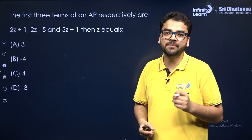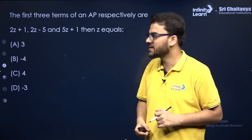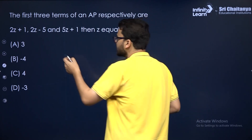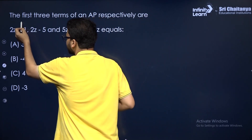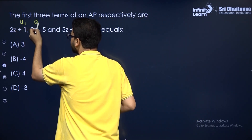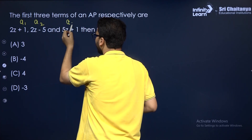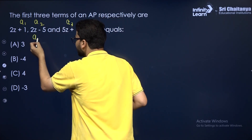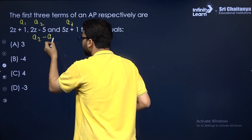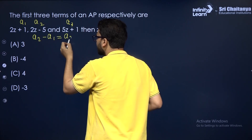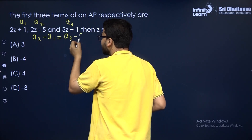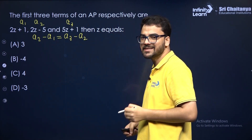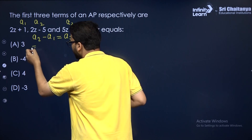AP means arithmetic progression. These three terms are in AP — just call them A1, A2, and A3. The definition of an AP is that the difference between a term and its previous term is the same. So A2 minus A1 is equal to A3 minus A2.